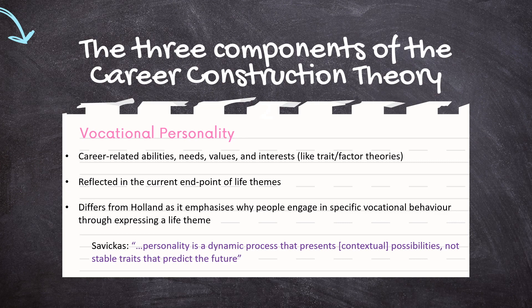Holland was really just interested in measuring and matching, but Savickas wants to know why. If a career counselor can help a person understand why and how they ended up with such life themes and vocational personality, they will be able to make this analysis again and again in their life when needed — because the 21st century is all about changing jobs, changing careers, and disruption. People can't come to a career counselor every week; they need to be equipped to understand how life themes and career development emerge and evolve. He sees personality as a dynamic process that presents possibilities, not a set of stable traits that predict the future, but an ongoing construction we engage in over our lives.